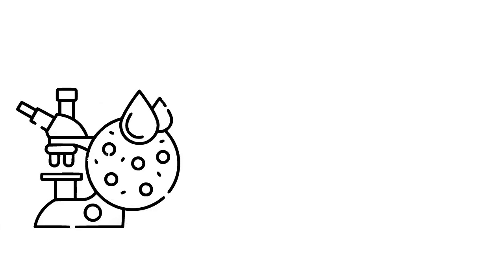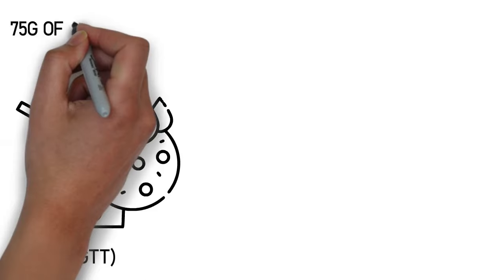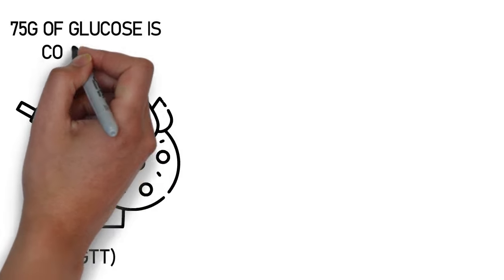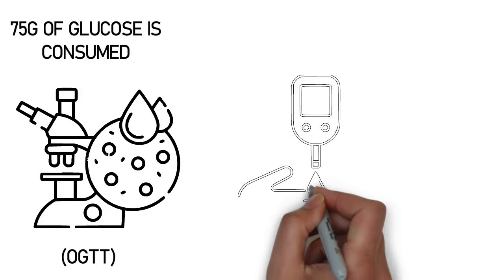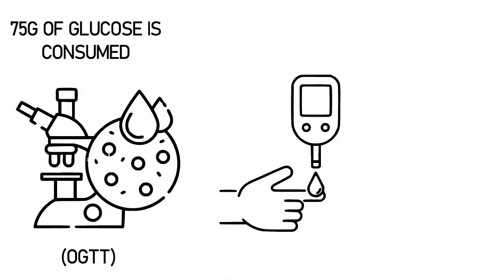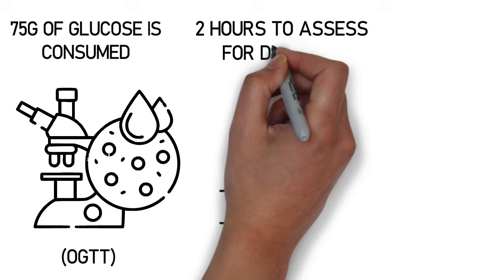In an oral glucose tolerance test (OGTT), 75 grams of glucose is consumed and blood glucose levels are measured at zero and two hours to assess for diabetes.